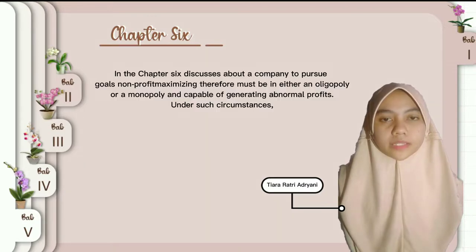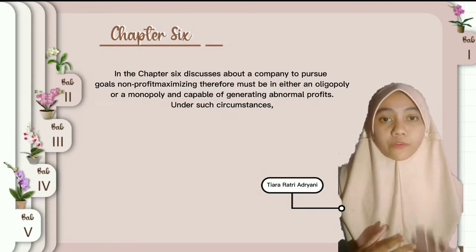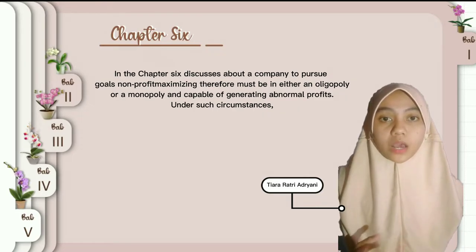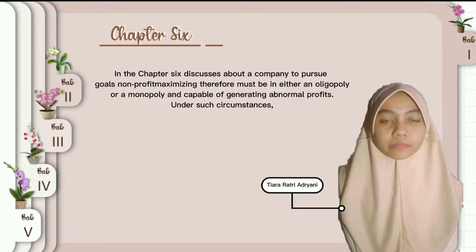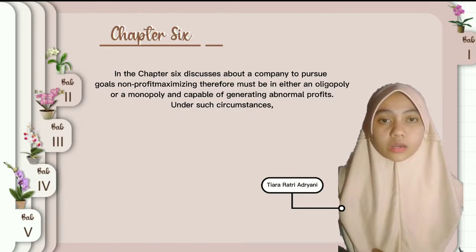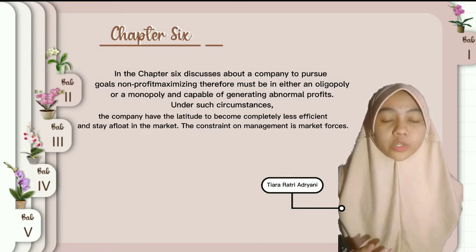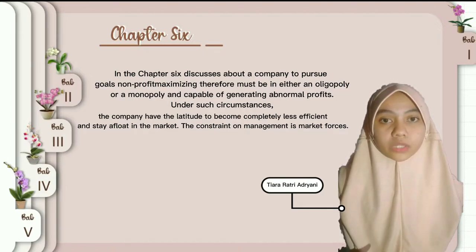In chapter 6, the discussion is about a company's pursuit of non-profit maximization, maximizing market forces in Asia, and oligopoly or monopoly, and being capable of generating abnormal profits. Under such circumstances, the company has the tendency to become competitively less efficient and yet survive in the market.